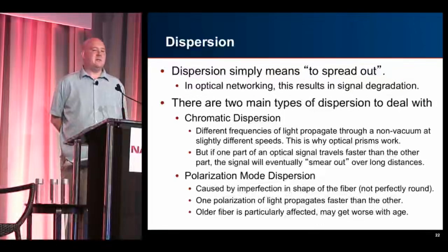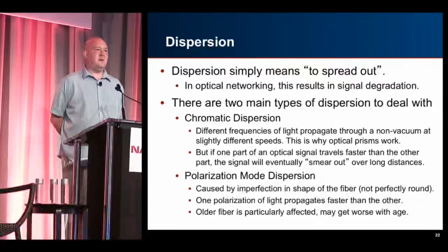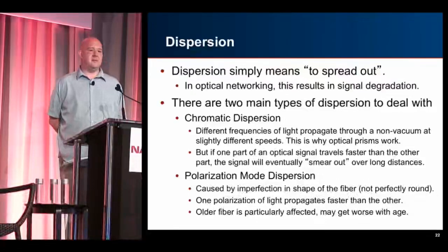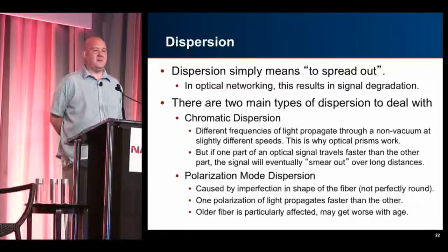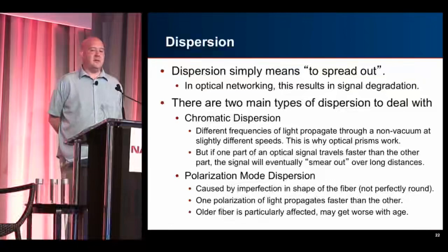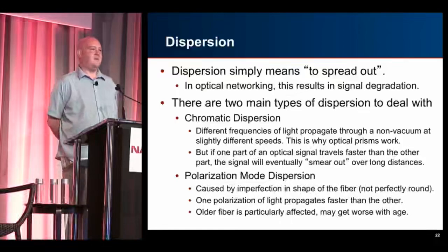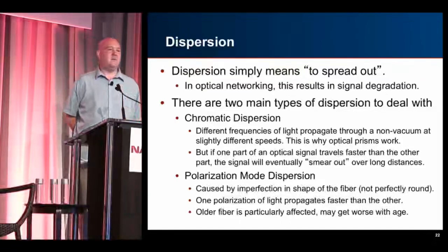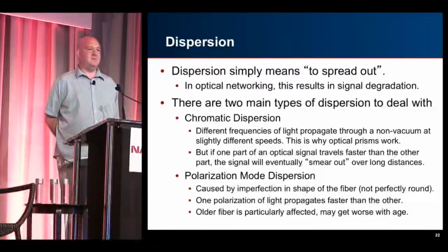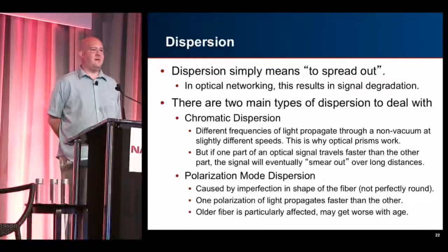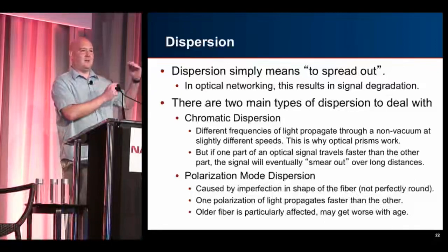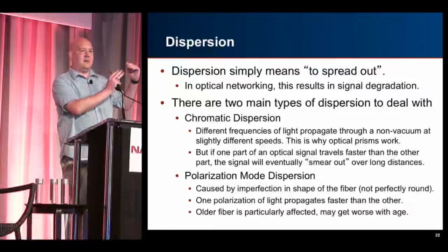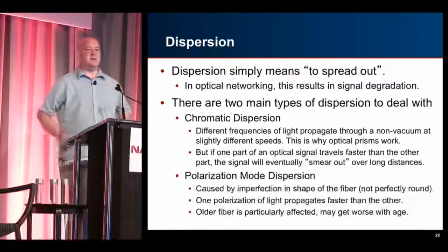There's a concept in optical networking called dispersion — basically meaning 'to spread out.' When that happens to an optical signal it results in signal degradation. The first main type is chromatic dispersion: different frequencies of light propagate through a non-vacuum medium at different speeds. After traveling some distance, the lower frequency has propagated at a different speed than the higher frequency. This is actually how optical prisms work — light passing through the glass spreads out into a rainbow because different colors travel at different speeds.